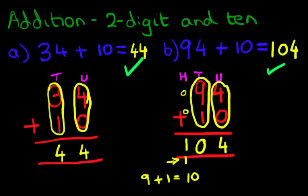And that answer is correct. So that is the addition of two-digit numbers and 10 using the vertical format.